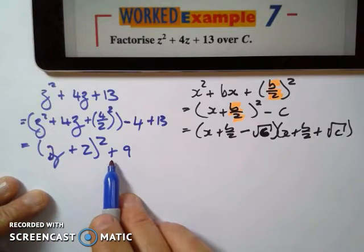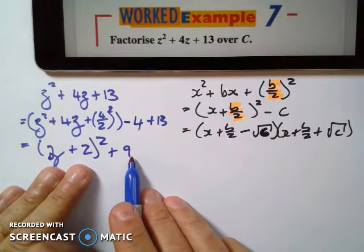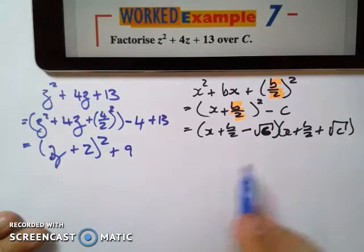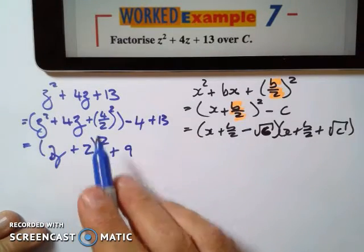Now, I can't do it because that's a plus 9. So I don't have the difference of 2 squares here. And this is where the over C comes in. So I can rewrite this not with any real factors. This thing does not have real factors.